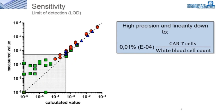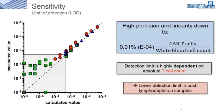Starting with sensitivity: we used negative controls and near-blank dilutions to calculate the limit of blank and the limit of detection on our 10-color Navios flow cytometer from Beckman Coulter. Results from three independent experiments suggest precise and linear quantification of the CAR T-cell fraction down to 0.01%. Nevertheless, it is important to note that the detection limit depends to some extent on the absolute number of T cells and might be critical in post-lymphodepletion samples.